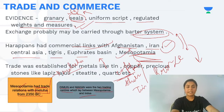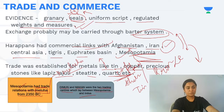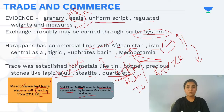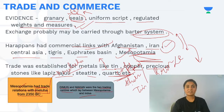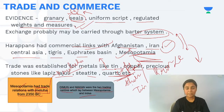Trade was established in metals like tin and copper, precious stones such as lapis lazuli, steatite, and quartz. Cotton and various food grains were exported and imported. Seals were made of steatite and used for stamping goods during trade as well as for making amulets.